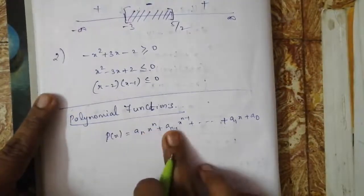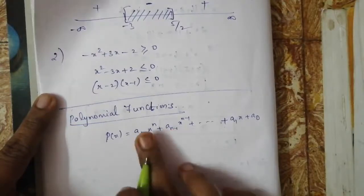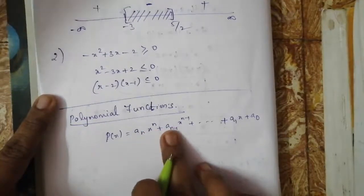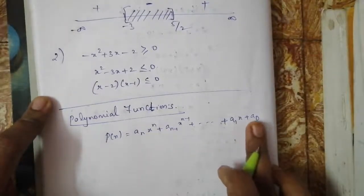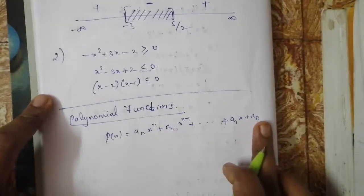Functions of the form f(x) or p(x) of the form aₙxⁿ plus aₙ₋₁xⁿ⁻¹ plus ... plus a₁x plus a₀ — this we call a polynomial function. aₙ, aₙ₋₁, all of them we call the coefficients of xⁿ, xⁿ⁻¹ respectively, and the last term we call the constant term.